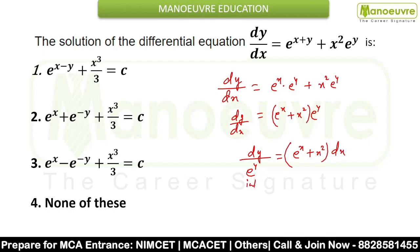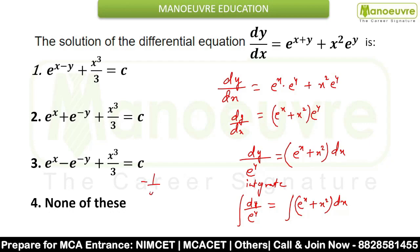Now integrate both sides. The integral of dy/e^y is the integral of e^(-y) dy, which equals -e^(-y). The integral of e^x is simply e^x, and the integral of x² is x³/3, plus the integral constant C. Hence you can say C = e^x + e^(-y) + x³/3.